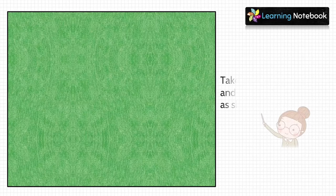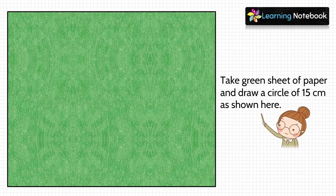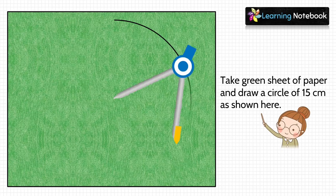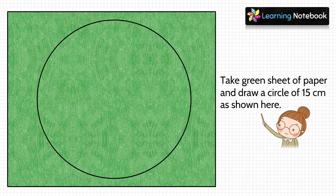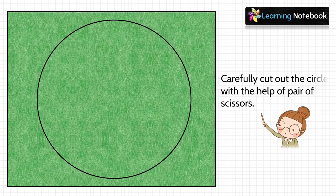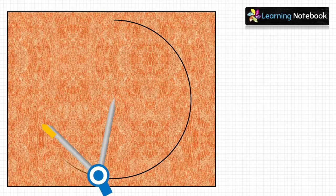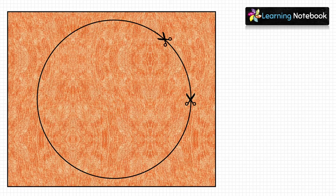In the first step, take the green sheet of paper and draw a circle of 15 centimeters, then carefully cut out this circle using a pair of scissors. Next, take the orange colored sheet, draw a circle of 15 centimeters on it, and then carefully cut out this circle.